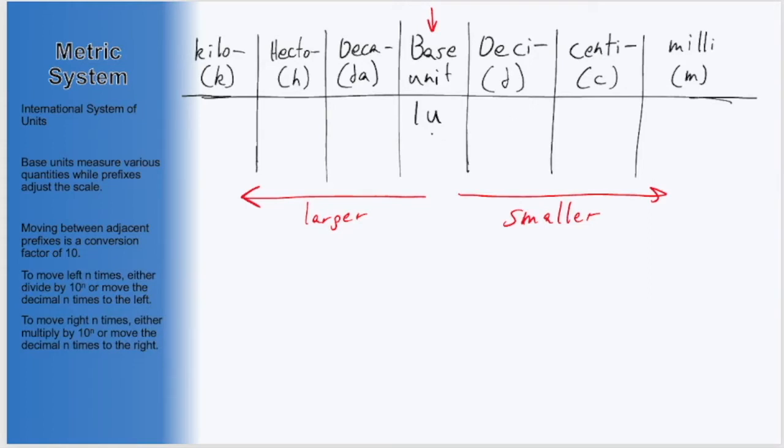If that's the case, then one space to the left, getting the deca prefix, will be 10 of our base unit U. So one deca unit is 10 of our base unit. For something I'll note in a moment, I'm going to write the 10 as 10 to the 1 power.